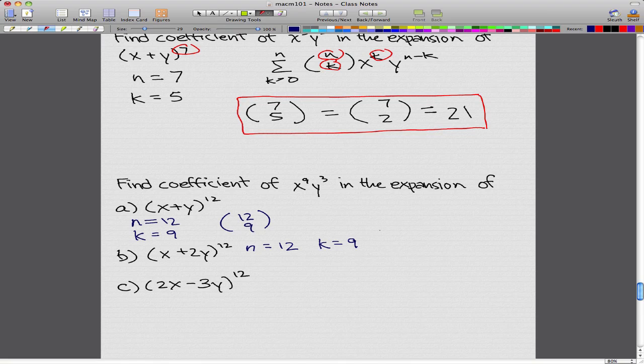So our n minus k would be 3, because 12 minus 9 is 3. So what we have to do is go along and do the same thing: 12 choose 9.